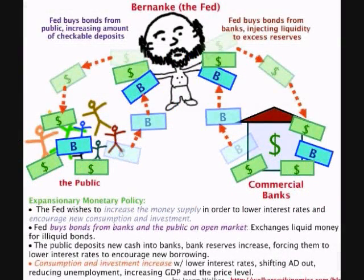When the Fed raises or lowers the Fed Fund's target rate, it does not actually physically change the rate. Rather, it changes the rate by increasing or decreasing bank reserves by buying or selling government securities — bills, bonds, notes. If the Fed wants to lower interest rates, it buys government securities from the open market. When the government pays for the securities, it increases bank reserves. This gives the banks more money to lend out, which frees up credit. Because there is now more money to lend out, banks must lower their lending rates to attract more borrowers.